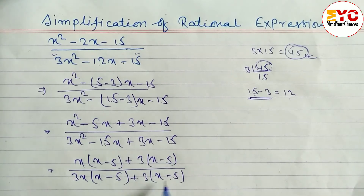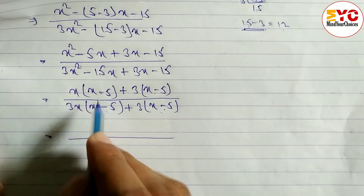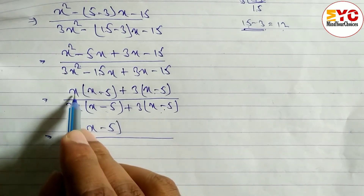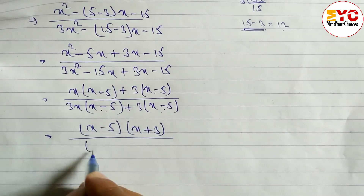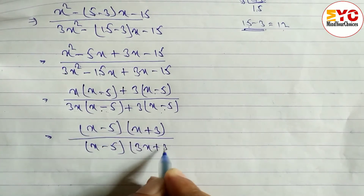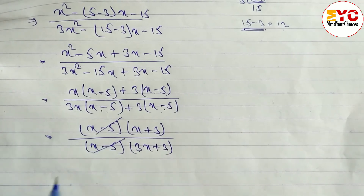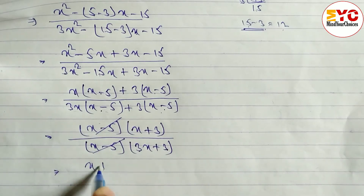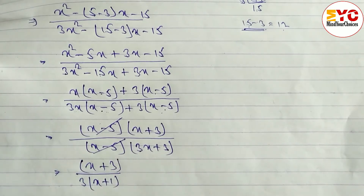One thing to keep in mind: when factorizing, the bracket expressions must always be the same. Now we take x minus 5 common — remaining x plus 3. Similarly x minus 5 common in denominator, remaining 3x plus 3, and we take 3 common too. x minus 5 and x minus 5 cancel. The answer is (x+3) / 3(x+1).